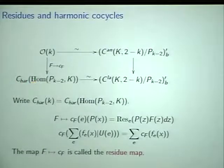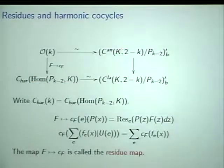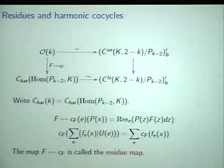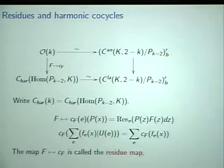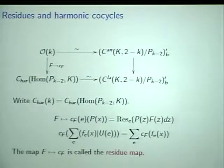P(k-2) is the finite dimensional space of polynomials of degree k minus 2, which has a certain group action because it sits inside another one of these spaces. These are the harmonic functions with values in this finite dimensional vector space. On the right-hand side, this complicated space is the space of locally analytic functions on the boundary, keeping track of the group action. What I've done is taken the continuous dual of that with the strong topology. This upper isomorphism is the basic duality isomorphism that identifies rigid functions with distributions on the boundary.